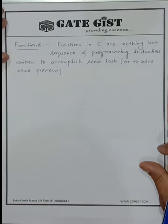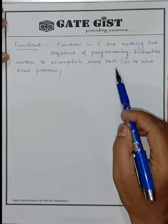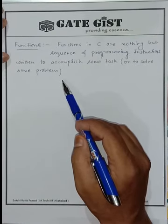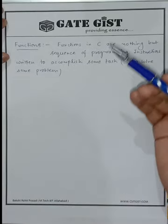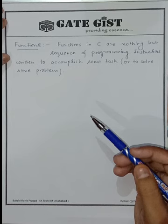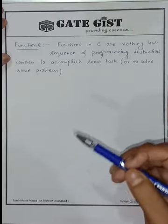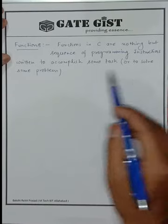Today I am going to start a new topic which is functions. So first of all, let us see what is function. I have already written: functions in C are nothing but sequence of programming instructions written to accomplish some task or to solve some problem. What does this mean? What is function? Just sequence of instruction?